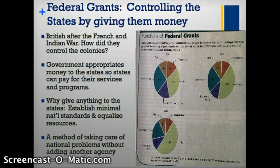Fiscal federalism was most evident in early history with the British after the French and Indian War. How do they control the colonies? Through taxation — the Stamp Act, Sugar Act, the Tea Act — all of those taxes that we didn't like because it was taxation without representation.